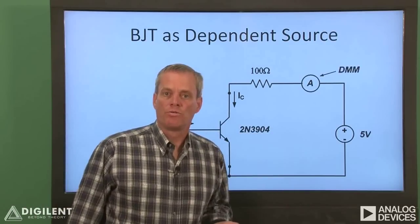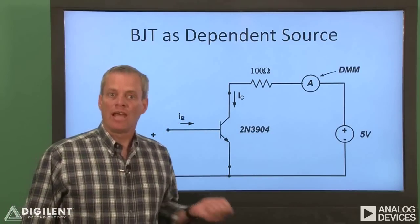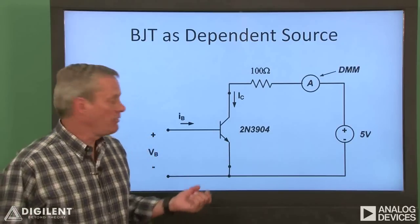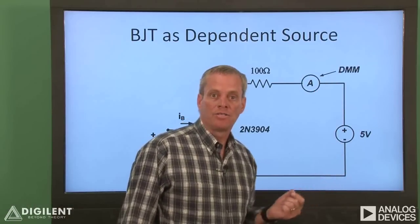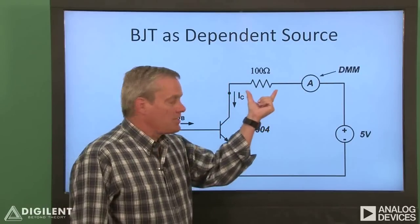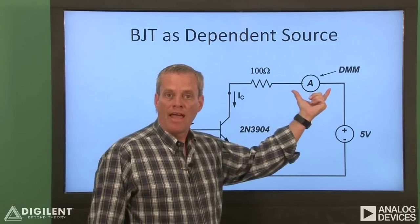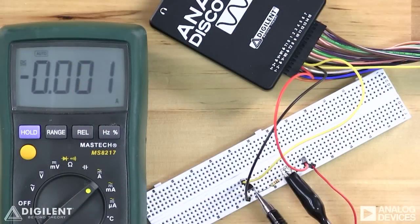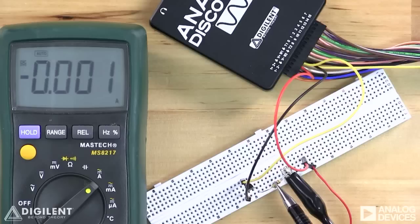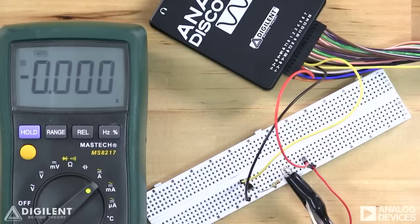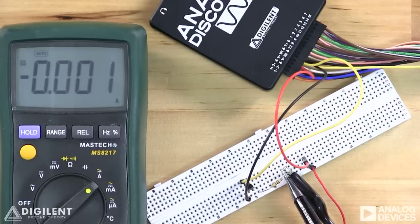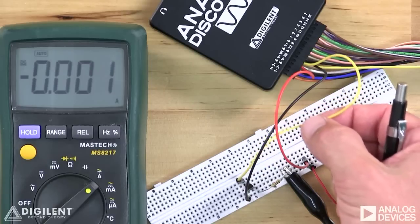This is the schematic of the overall circuit we'll use to create our second dependent source. It's very similar to the circuit we used last time — essentially, we've just replaced the MOSFET with a BJT. The BJT base voltage is going to be applied with the waveform generator. The V-plus voltage supply is going to be used to provide the collector current. There is still a 100-ohm resistor used to limit the current, and we'll measure the current with an ammeter as before. Here's our implemented circuit. The BJT terminals are the base, the collector, and the emitter. We're connecting our power supply through the ammeter, and applying a base voltage with the AWG channel yellow wire.